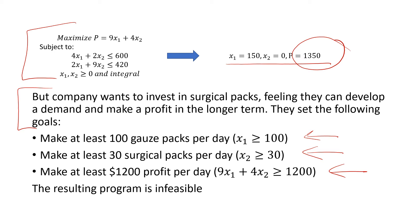Instead of making zero surgical packs — which was the optimal solution — they're going to make a few of them and sell them because they think that in a few years they can make more profits off them. That's the compromise. But if you take those three objectives and put them into your linear program, you get an infeasible problem. You cannot find a solution that meets all of these constraints.